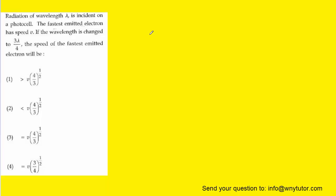We know, based on the photoelectric effect, that when a metal surface is subjected to photons, electrons from that metal can possibly be ejected. There is an equation that relates the kinetic energy of those ejected electrons to the energy of the photons that are striking the metal surface and also a quantity known as the work function.